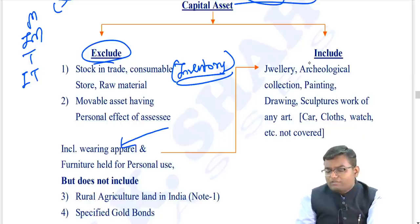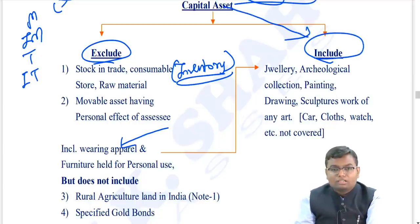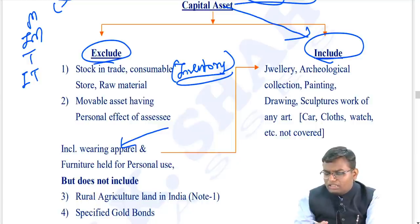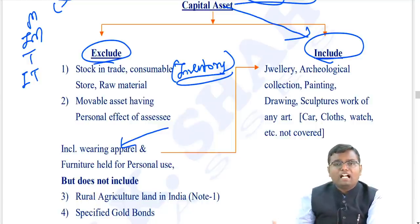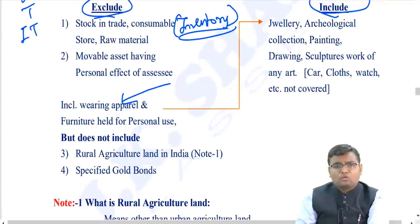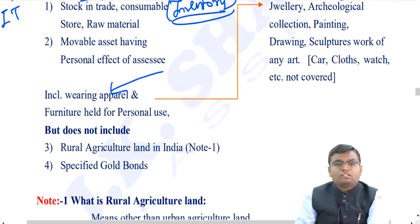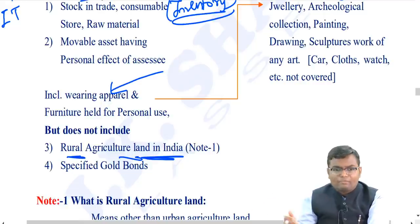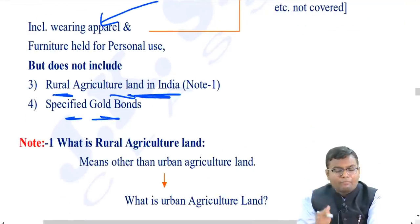Certain movable assets are specifically included as capital assets: jewelry, archaeological collections, paintings, drawings, sculptures, and works of art. These attract capital gain on sale. However, other movable personal assets like cars, clothes, and watches are not capital assets. Rural agricultural land in India is not a capital asset. Specified gold bonds are also not a capital asset.